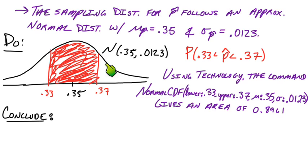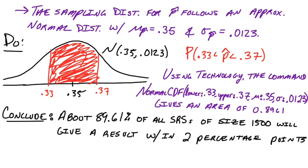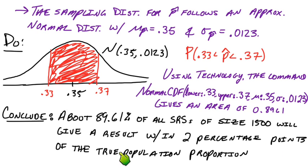So let's conclude. If this curve represents all of the P-hats, all the possible samples of college kids, that means about 89.61% of all the samples we could take, of all the SRSs, will give a result within two percentage points of the true population proportion, which was 0.35.